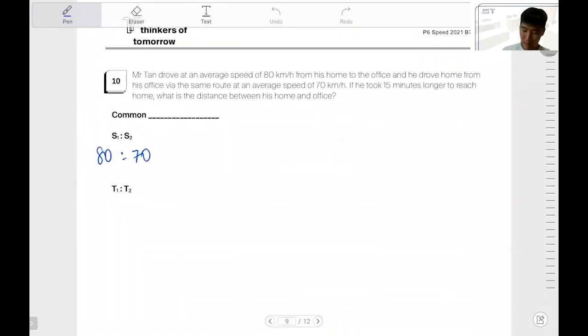Okay, 80 to 70 km per hour is also the same as 8 is to 7. Okay, this is a common what? Why don't we start off, Ajmao, this is common what? Common time or common distance?